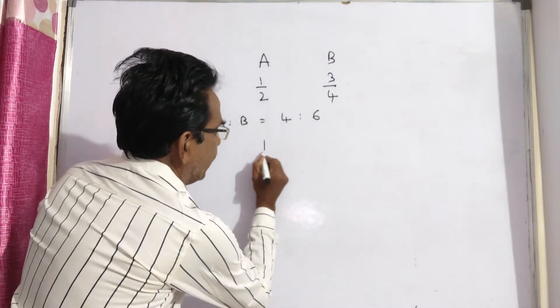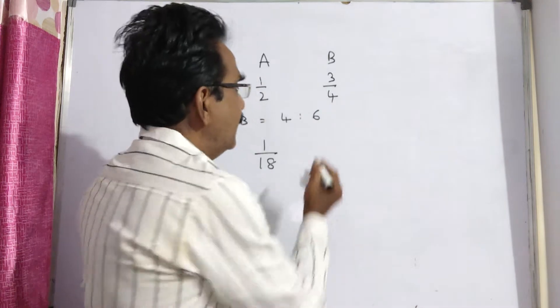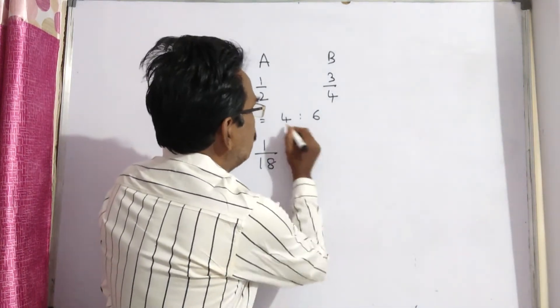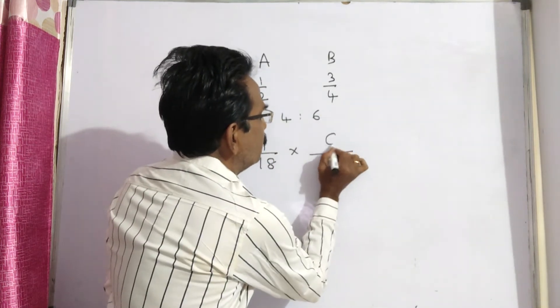Total work done by A and B in one day is 1 by 18. Let us divide 1 by 18 in the ratio 4 is to 6. See total parts, 10 parts, of which B does 6 parts.